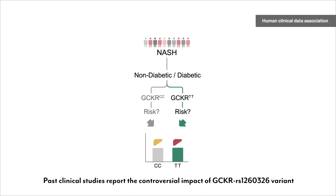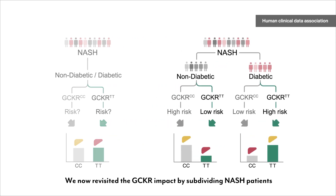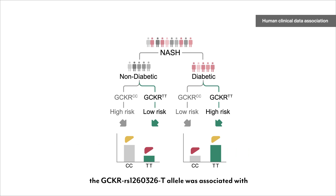Past clinical studies report the controversial impact of the GCKR SNP variant without addressing insulin-resistant state. We now revisited the GCKR impact by subdividing NASH patients based on diabetic state. Analysis of NASH cohorts revealed that the GCKR SNP allele was associated with enhanced inflammation only under diabetic state.